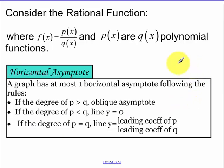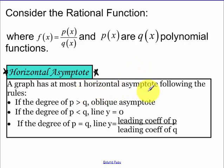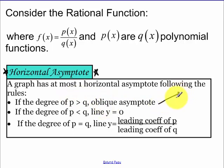And horizontal asymptotes — you want to make sure you memorize these rules. These rules are challenging for many students, but if you think about them, they're going to make sense. You can have at most one horizontal asymptote, because you have to follow one of these three conditions. If the degree of the top is bigger than the degree of the bottom, we have an oblique asymptote, which is going to look like a line — something in the form y equals mx plus b.